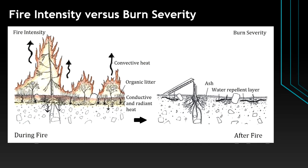The two terms are fire intensity and burn severity. Fire intensity represents the energy that is released from organic matter during the burning process, and it also refers to the instantaneous intensity of the fire while it is active.